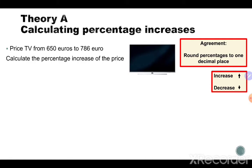So in this video we see a TV — a beautiful TV — and the price of the TV goes from 650 euros up to 686 euros. No idea why, but it is more than the old price. The new price is higher, and we need to calculate the percentage increase of the price of the 650 euros.